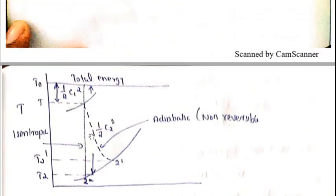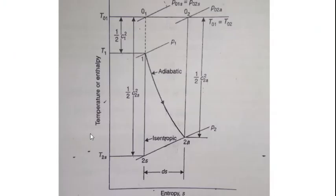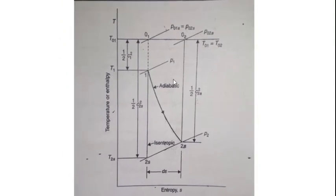Now, what is isentropic and adiabatic? We have to do the graph. Let's do the graph — this is our TS-diagram. The TS-diagram shows the stagnation state as the first step.